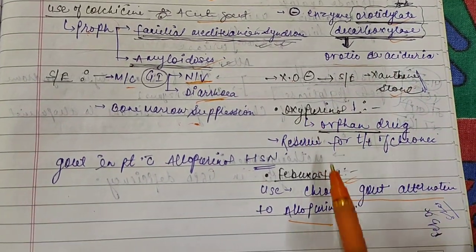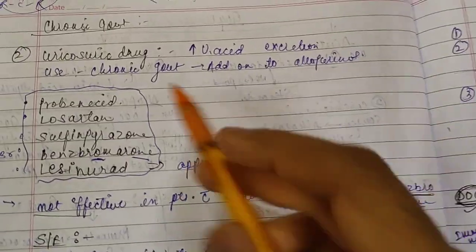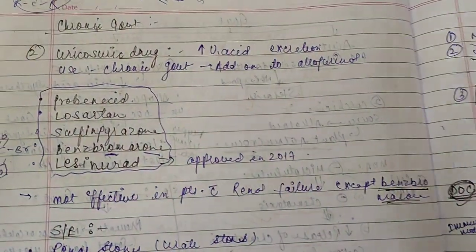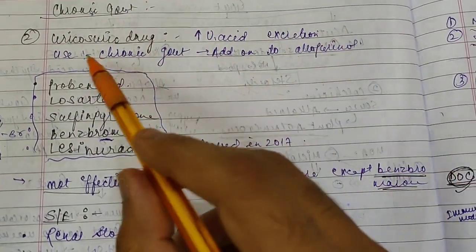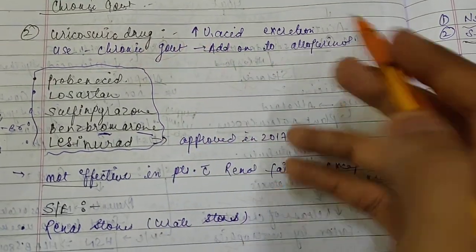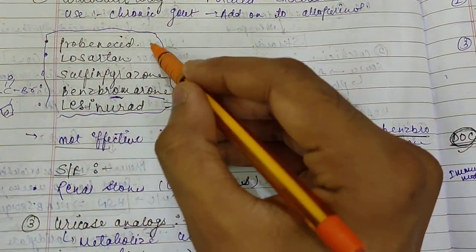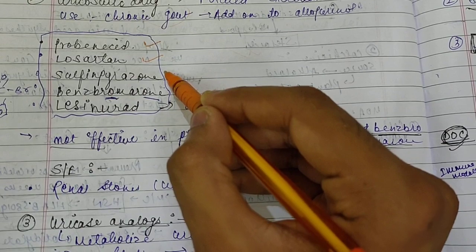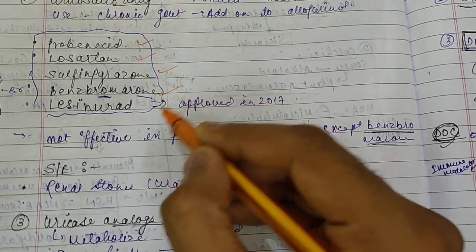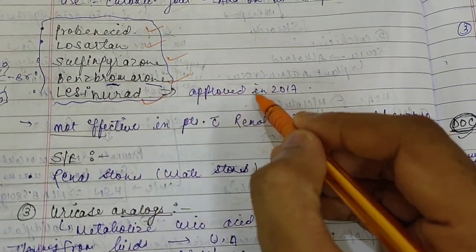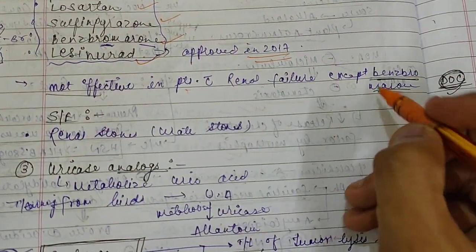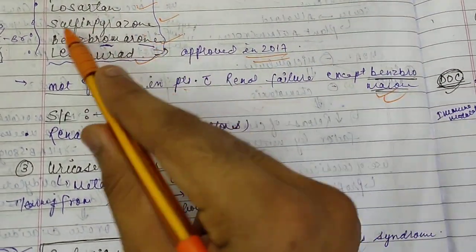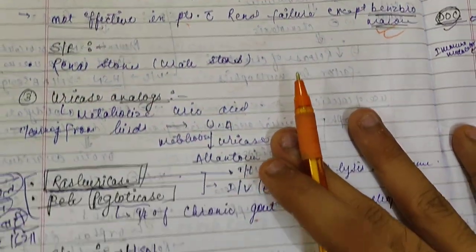Now the next group of drugs which are used in chronic gout is uricosuric drugs that will increase uric acid excretion. Used in chronic gout as add-on to allopurinol, drugs including probenecid, losartan, sulfinpyrazone, then benzbromarone, then lesinurad. This lesinurad was approved in 2015-16. It is not effective in patients with renal failure except benzbromarone, so you can give benzbromarone in renal failure patients also. Side effect is renal stones.